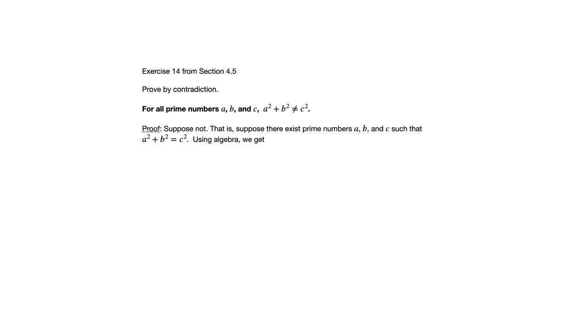So we begin by saying suppose not. That is, suppose there exist prime numbers a, b, and c such that a squared plus b squared equals c squared. That's the negation of the given statement. And this is why it was so important for us to understand how to write a negation of a statement because that is a critical step here in proof by contradiction.